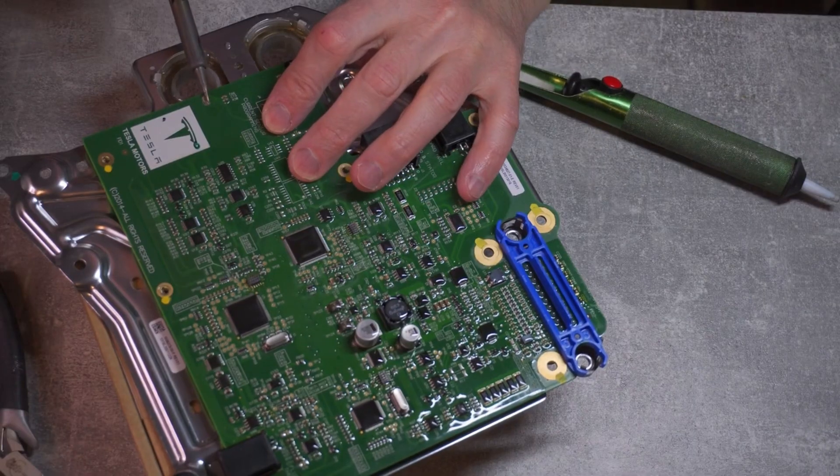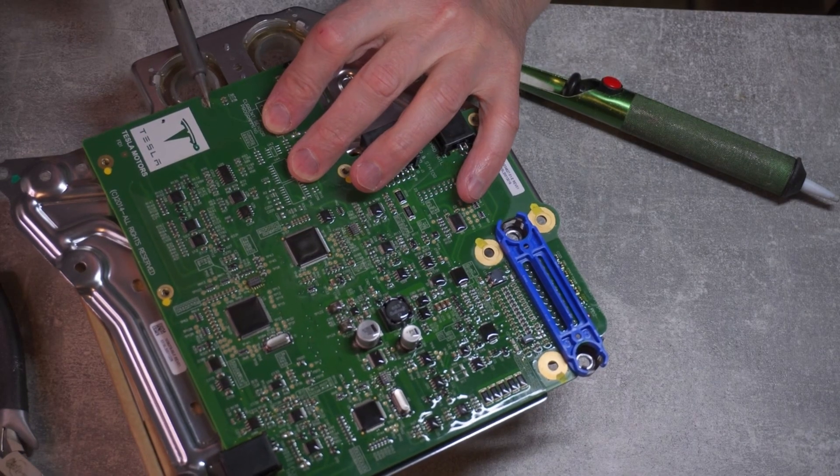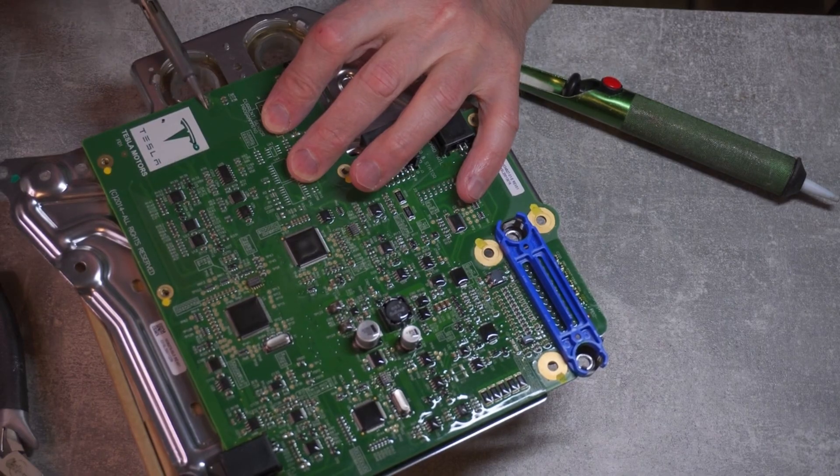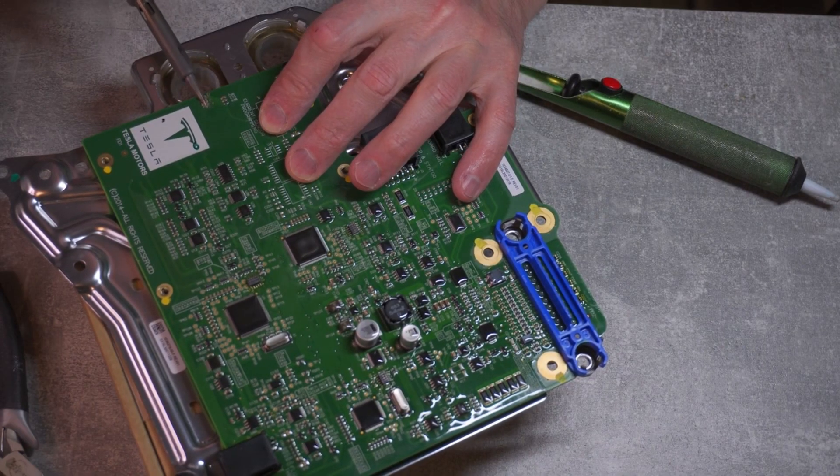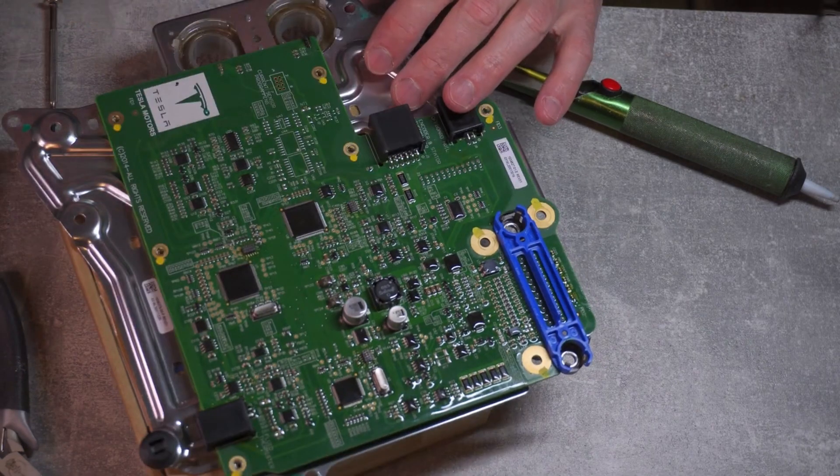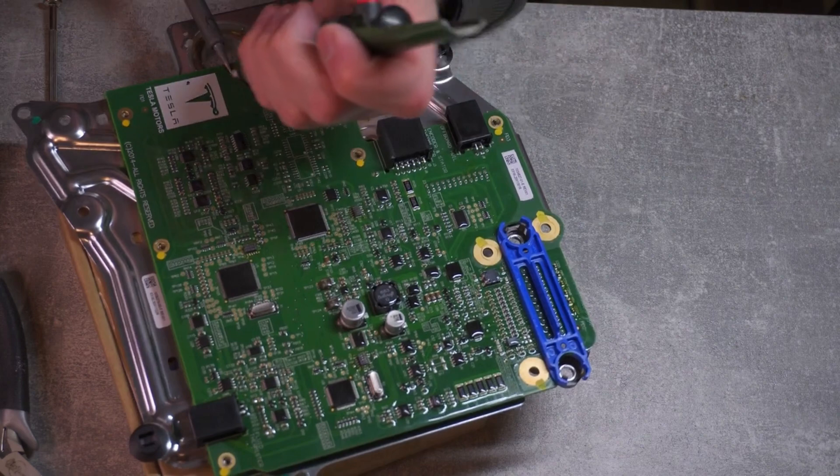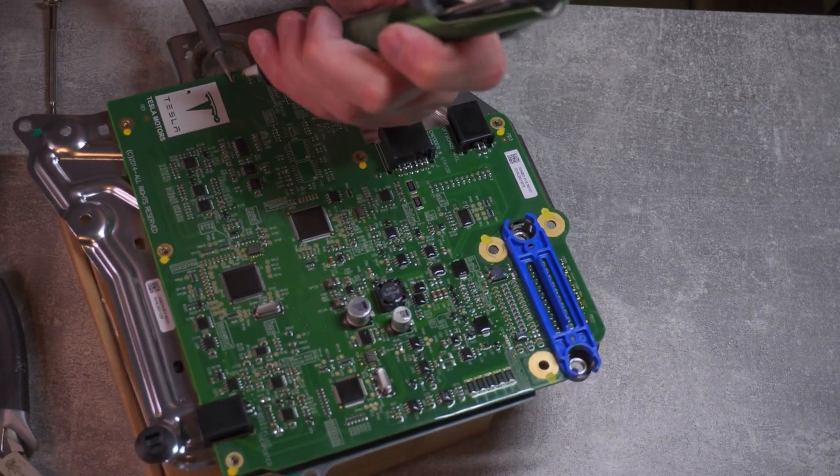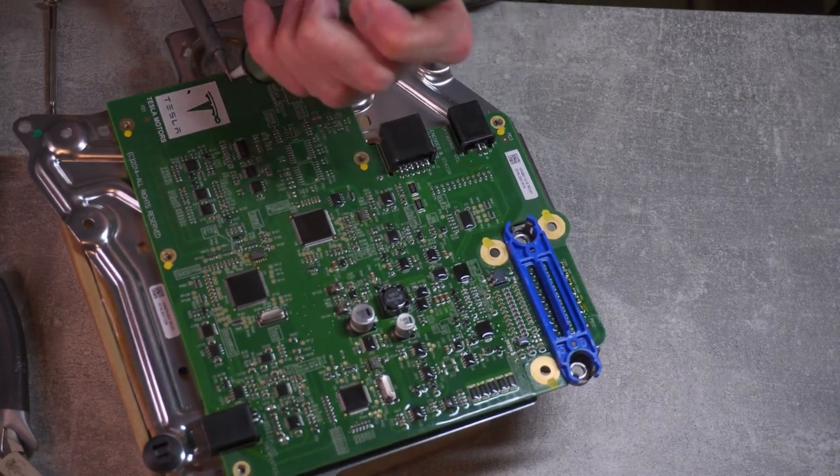I found that the best way to get rid of protective lacquer would be to heat it up with the soldering iron and actually scrape it off while moving the soldering iron across those three contacts. Having removed the lacquer layer, I started to use lots of flux and a sucking device to suck out all the solder from those connectors.